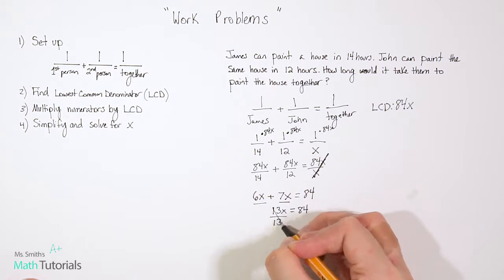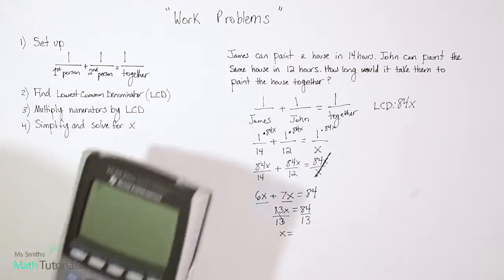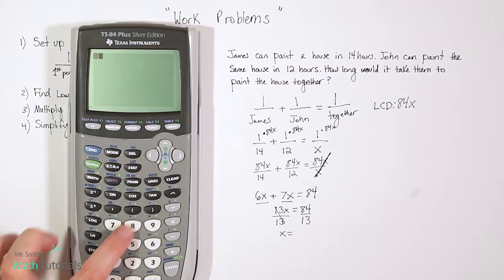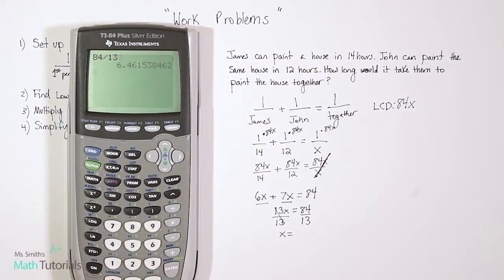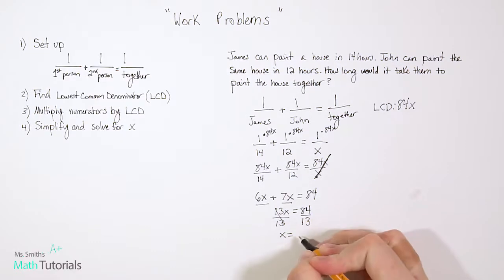Our final step to get x alone is divide both sides by 13. And then we get x equals, now 84 divided by 13 actually gives us a decimal, right? We don't get an even number, but let's look at that. So 84 divided by 13, we get a decimal. Now it didn't tell us how to round at all, but let's just round to the nearest tenth. That would make this 6.5. What that tells me is that if John and James worked together, it would take them approximately 6.5 hours.